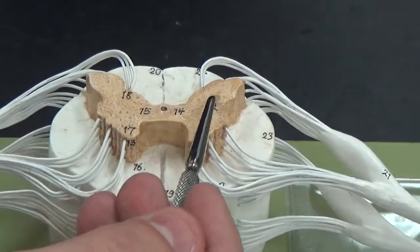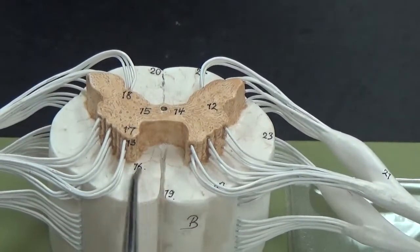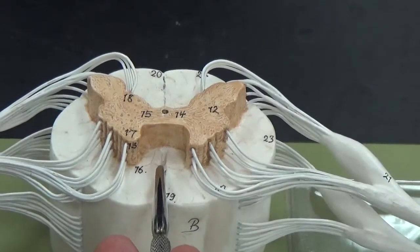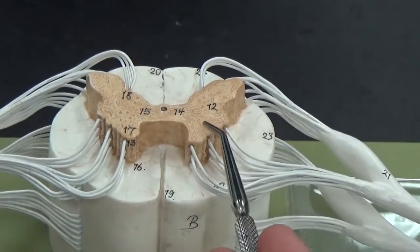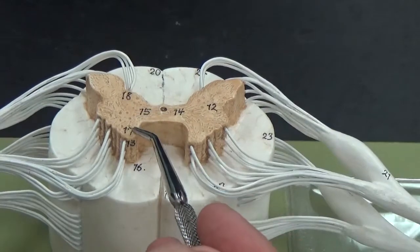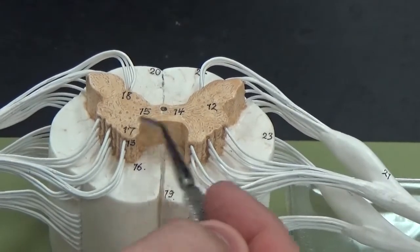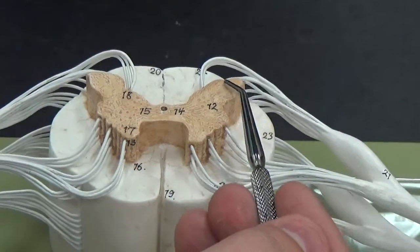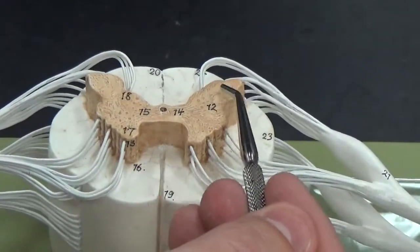Of my gray matter here, we now know that this is the anterior side, because that's where my anterior median fissure is. So that makes this an anterior horn of the gray matter. These are both the anterior horns of the gray matter. My posterior horns of the gray matter are on both sides there.